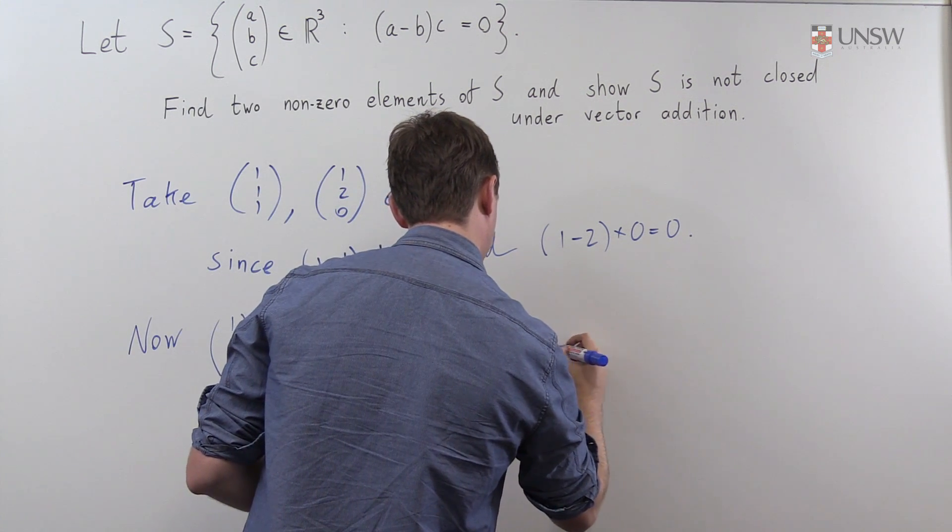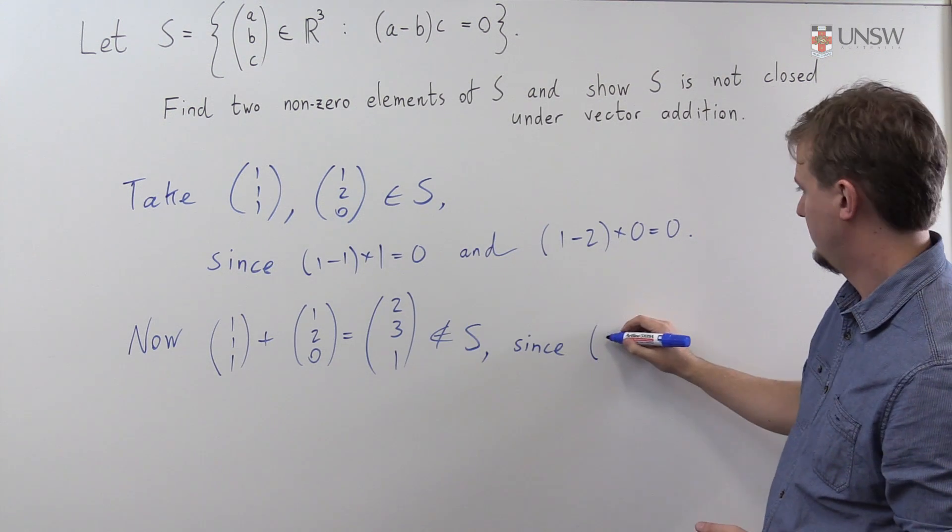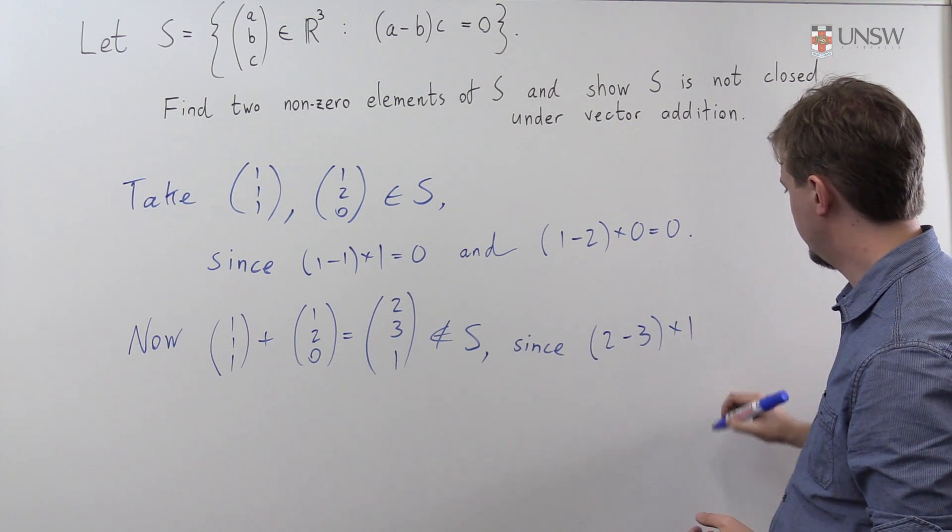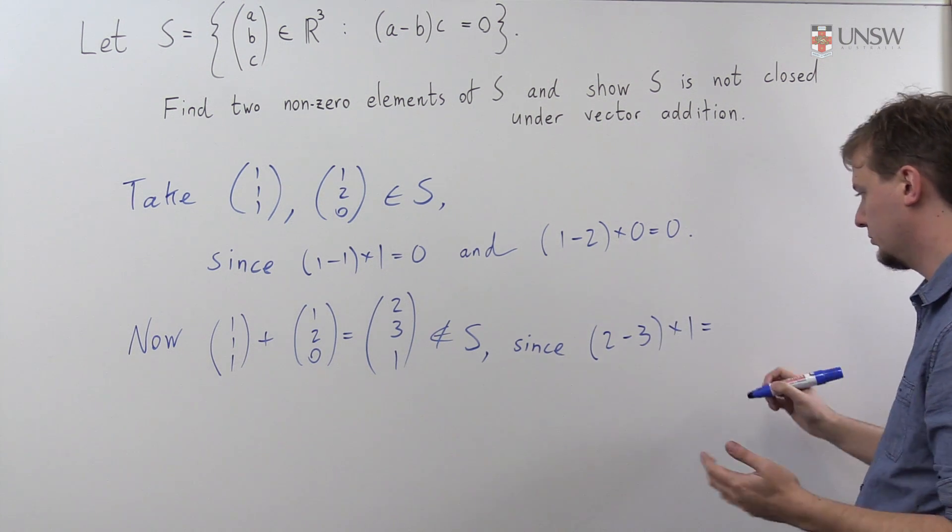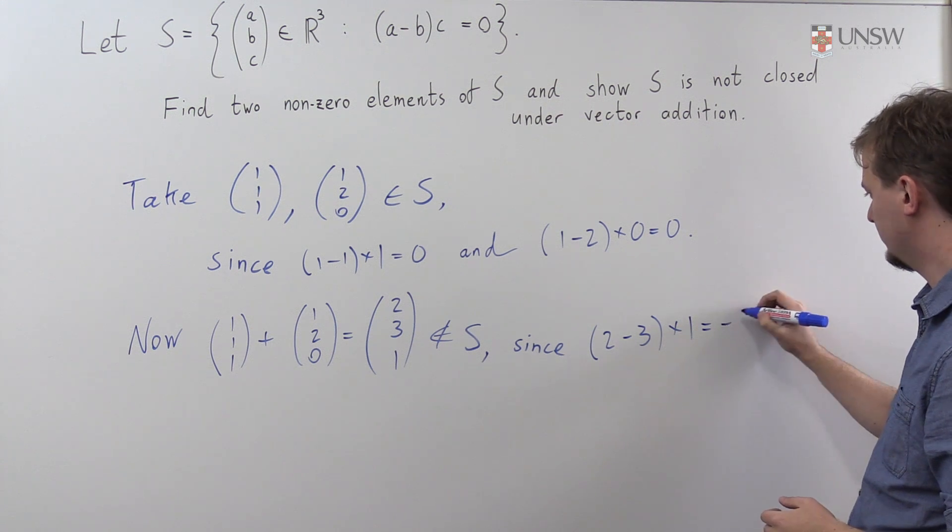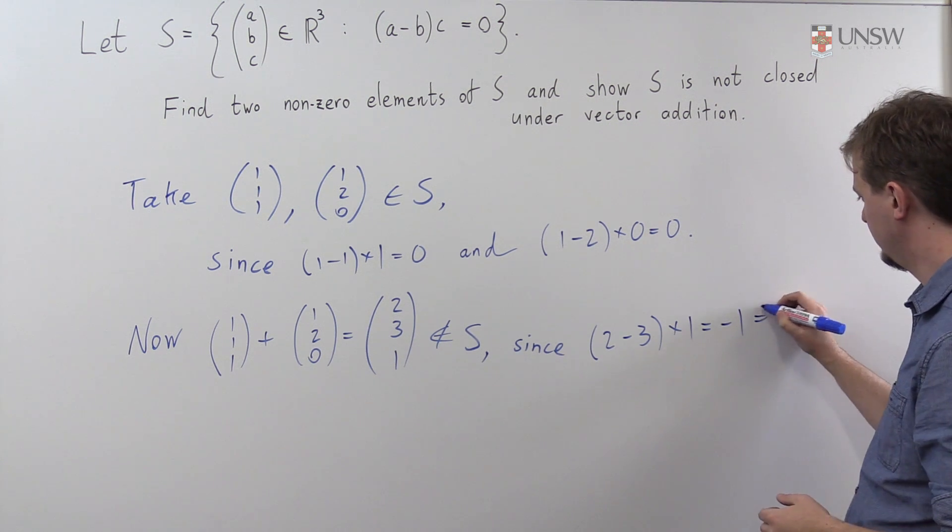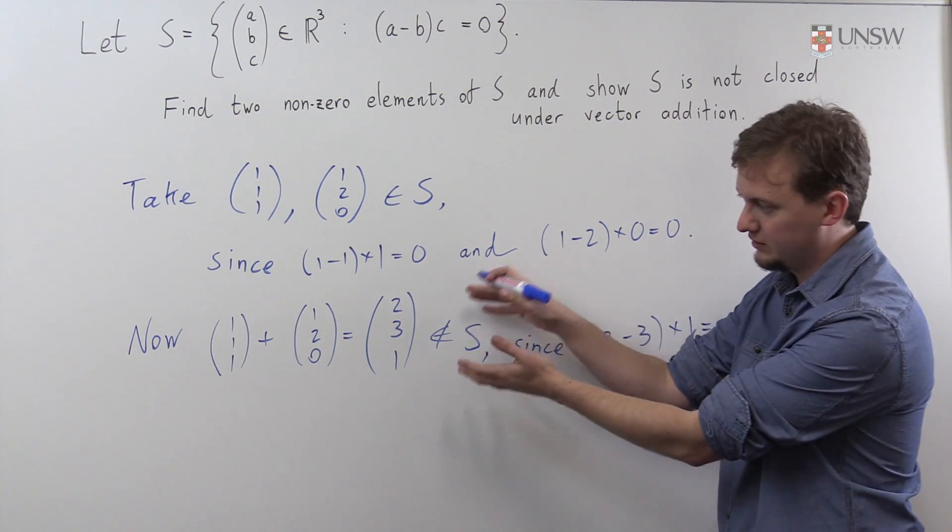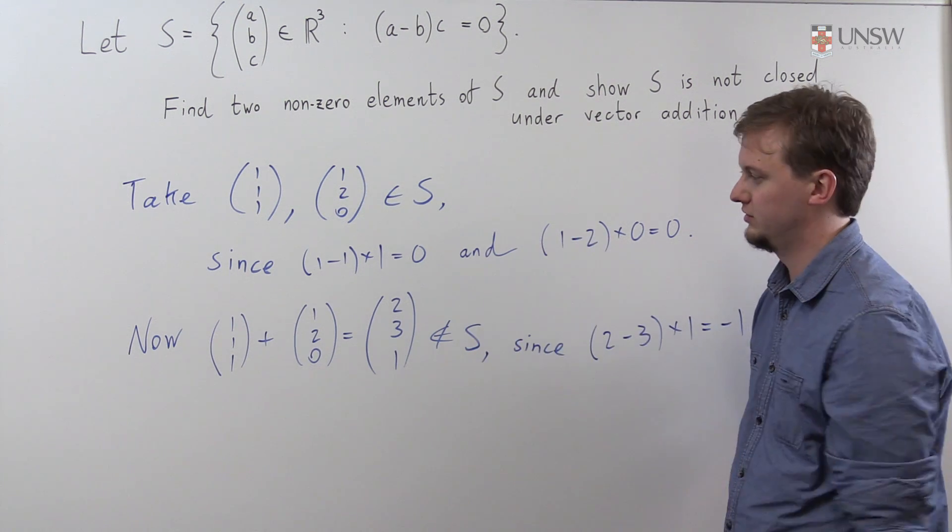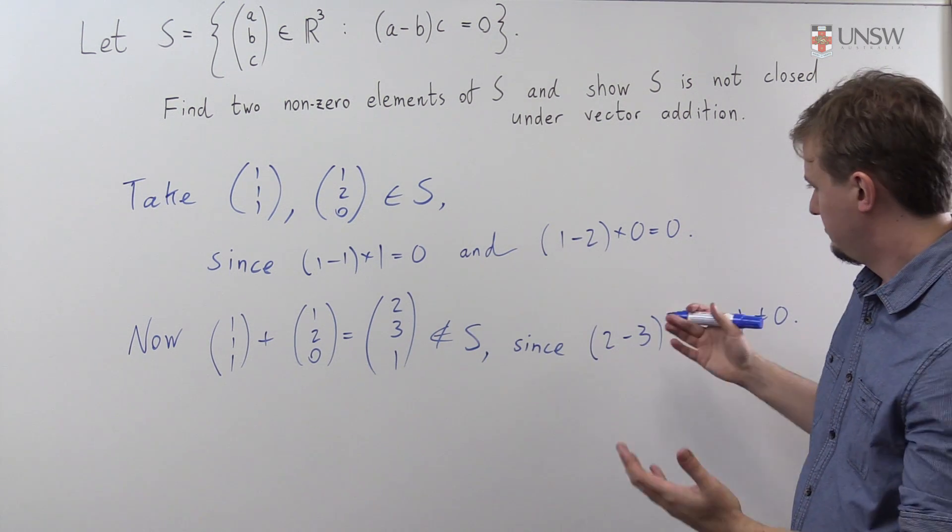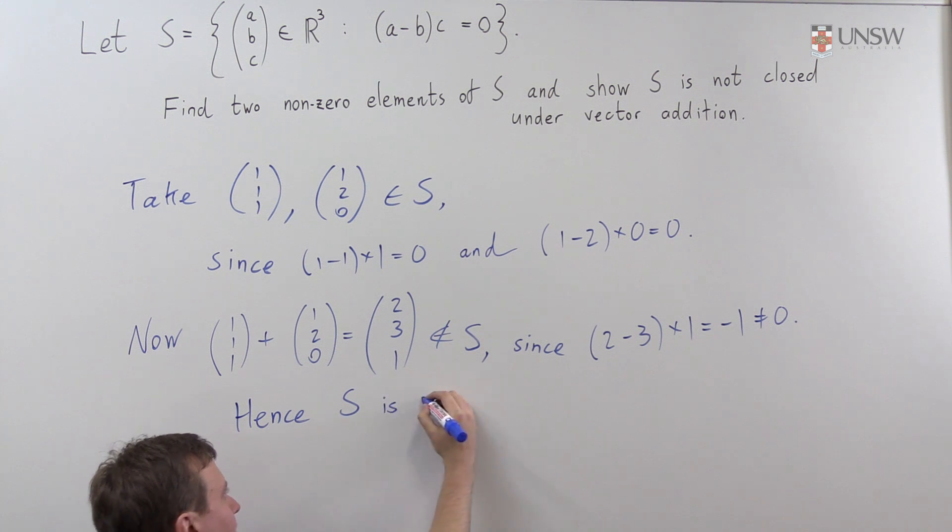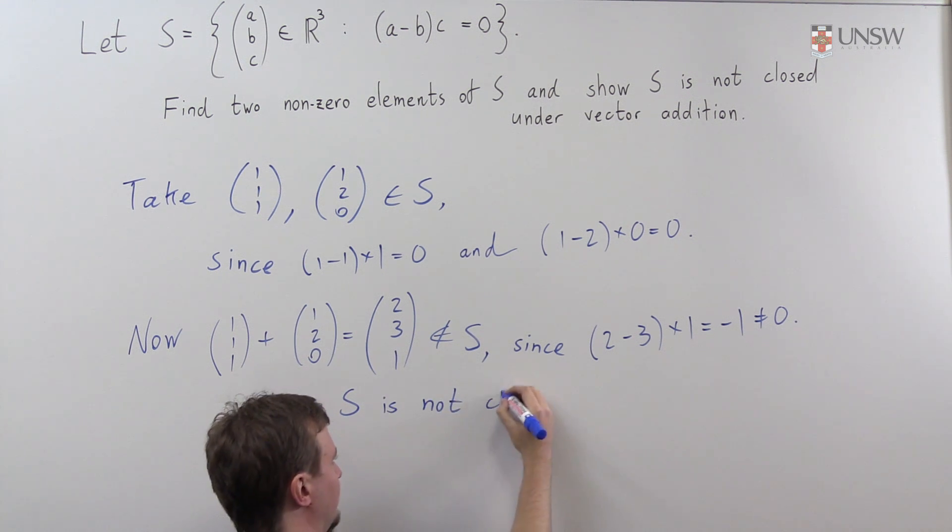Well, this is not in S since 2 minus 3 times 1 is equal to, well, it's equal to minus 1. And minus 1 is not equal to 0, i.e. this vector (2, 3, 1) is not in S. And that shows what we want. So hence, S is not closed under addition.